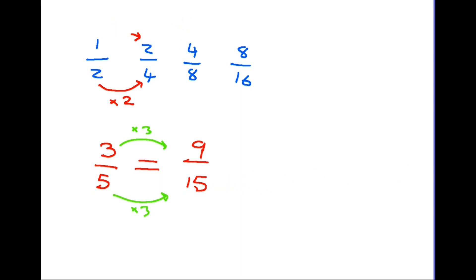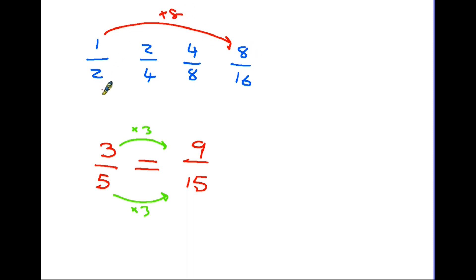Just going back to the top of the page, let's confirm our theory by looking at the relationship between the first and last fractions. One times eight equals eight, and two times eight equals sixteen. So again we've confirmed that those are equivalents.